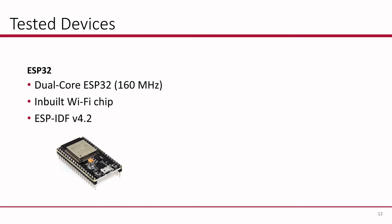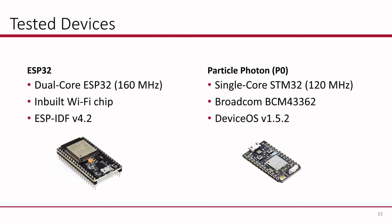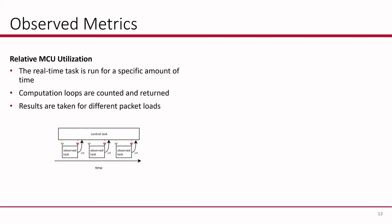Getting to our methodology, we tested two different devices. The first is the very popular ESP32, which has an inbuilt Wi-Fi chip. The second is the Particle Photon with a P0 chip — an STM32 ARM core — with a Broadcom Wi-Fi chip, using a framework called deviceOS. For our observed metrics, firstly, we looked at the relative MCU utilization using an experiment where we counted computation loops in an observed task. We increase the number of packets sent to the device to see if there is a change in computation loops.